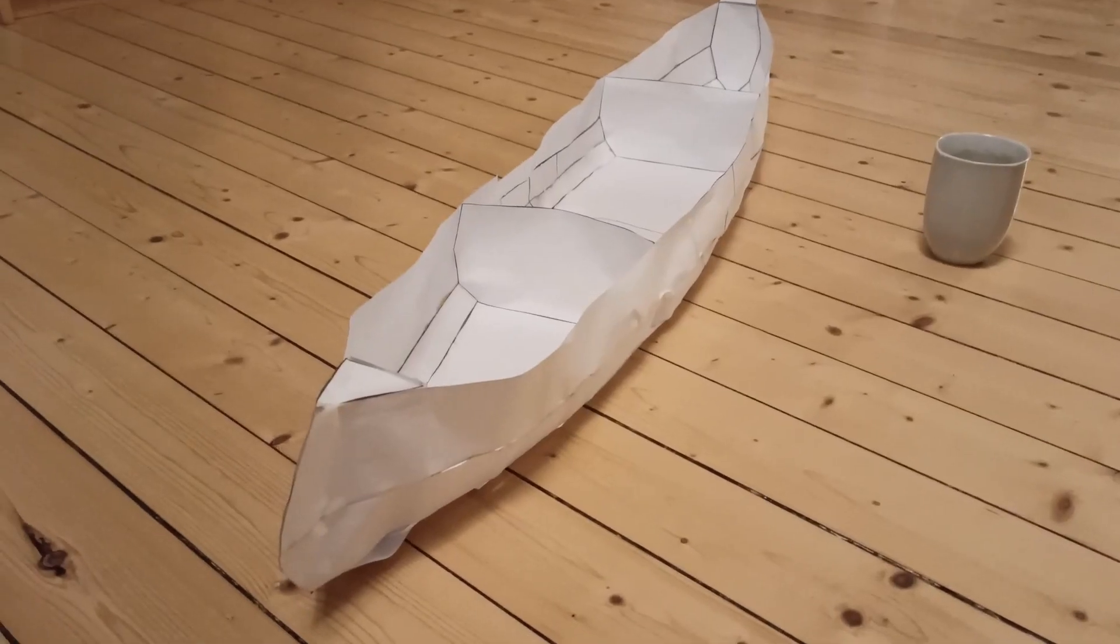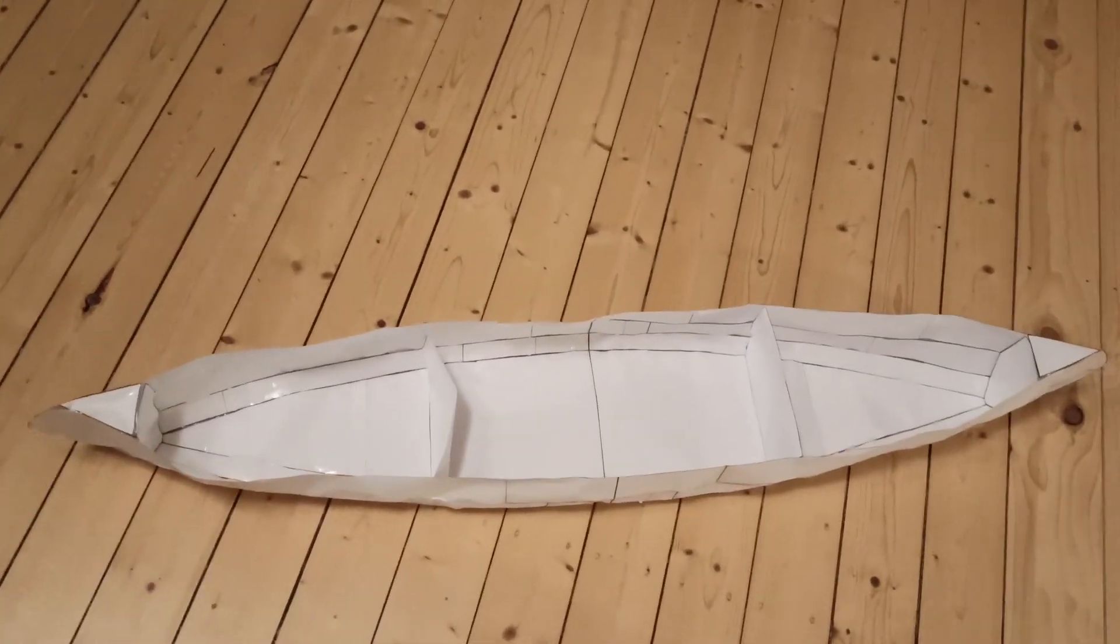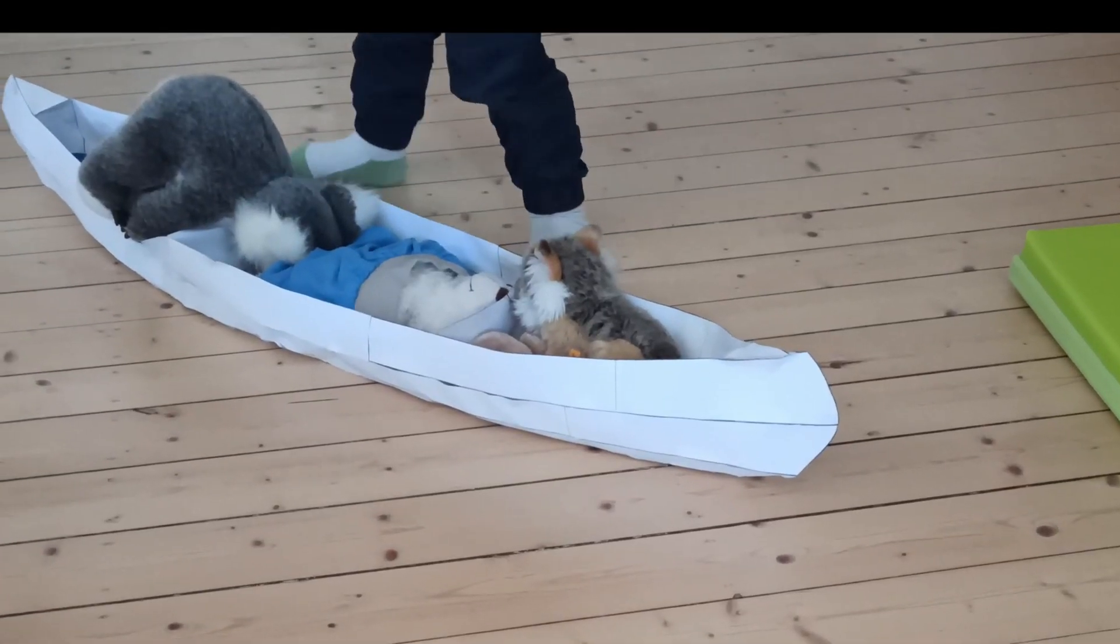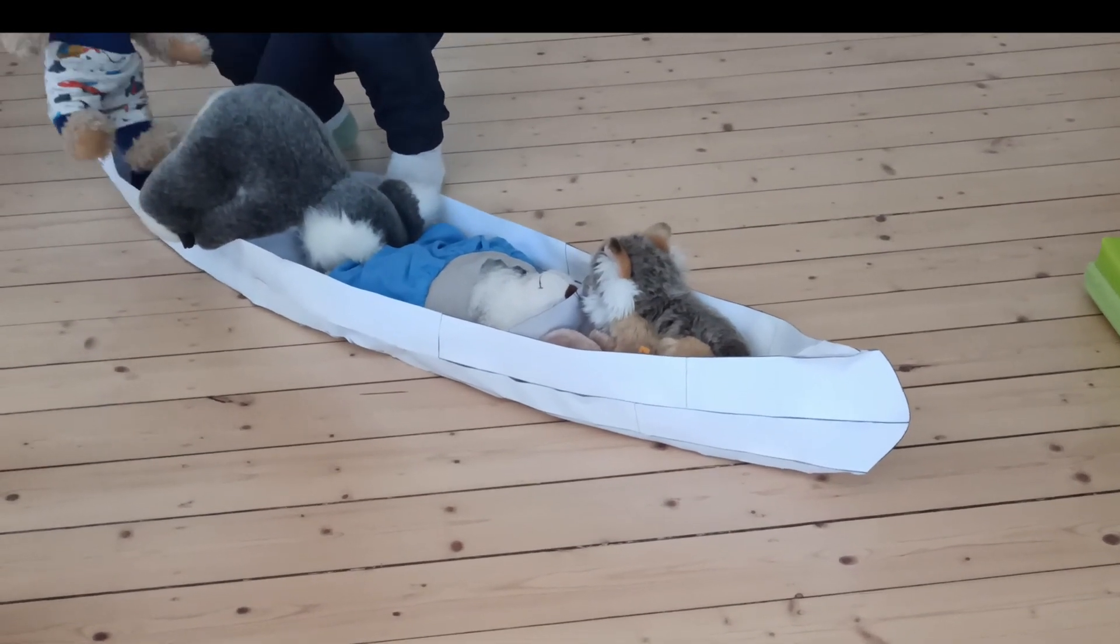To get a better feeling of the shape and also because I did not trust the unfold function of the CAD system completely I made a paper model that has a total length of about 1.2 meters. But mostly this small canoe was used to carry stuffed animals.